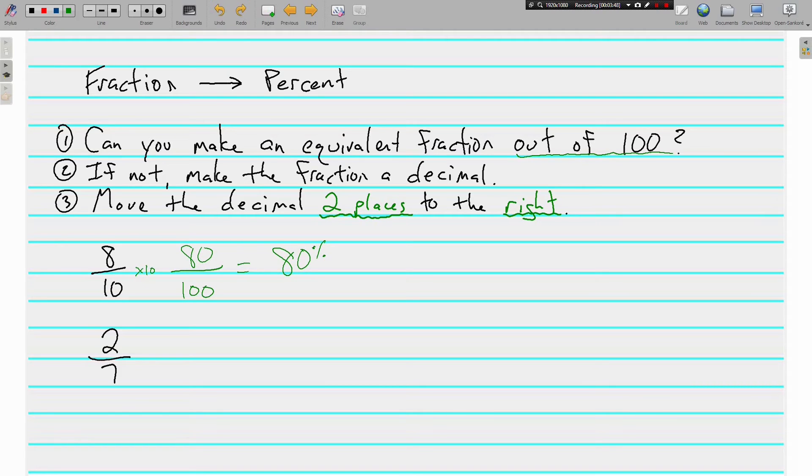Now this next example, the two-sevenths, 7 does not go nice and pretty into 100. So that's where we go up to our second step. No, we can't make an equivalent fraction out of 100. So we're going to make the fraction a decimal. And if you remember to do that, we divide 2 divided by 7.